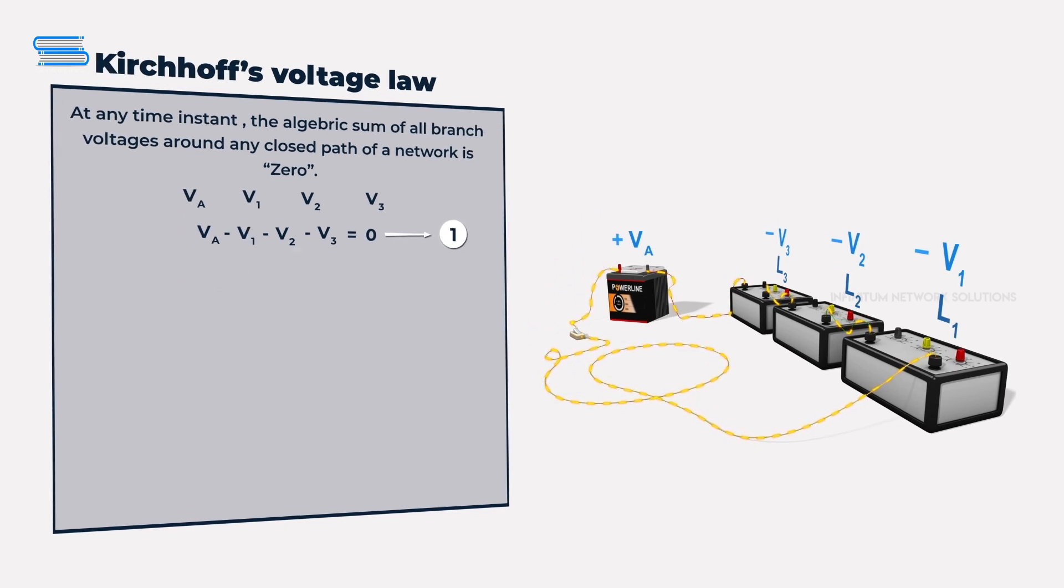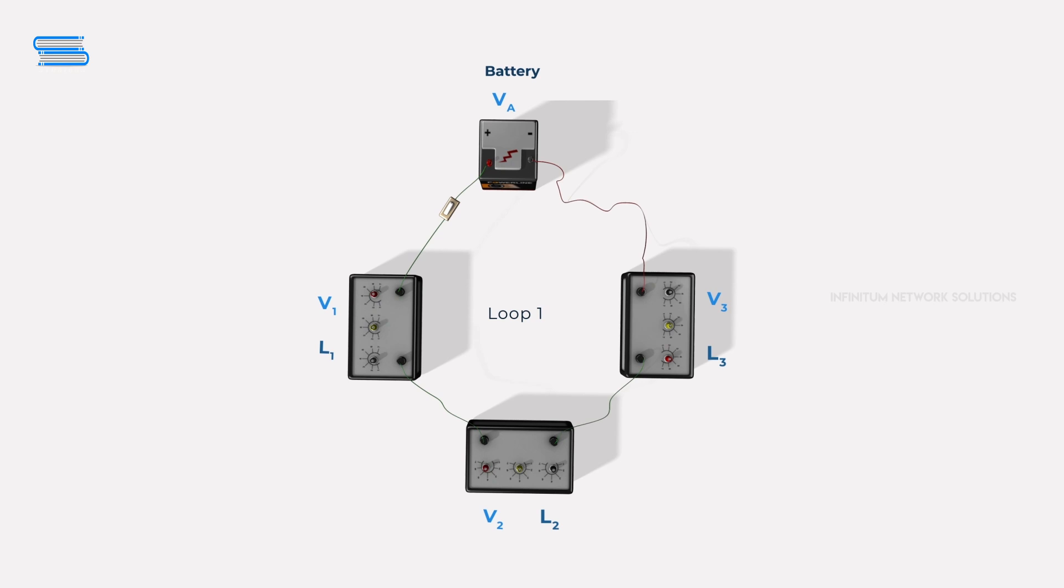To further understand how Kirchhoff's voltage law works, we're going to imagine that a charge Q is flowing through the closed network. Since the battery is giving energy to the circuit, the charge Q picks up an energy equal to Q times VA as it moves through the battery.